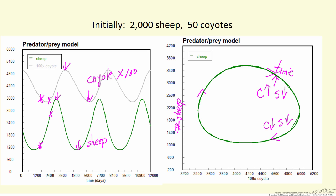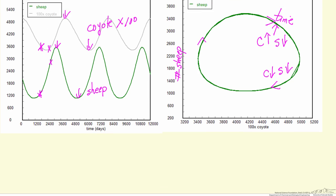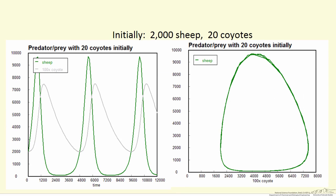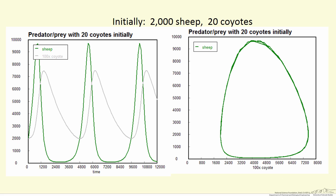A phase plane is a good way to understand the behavior of the system. If we change the number of coyotes initially, we see dramatic sensitivity. The oscillations have a different time scale.